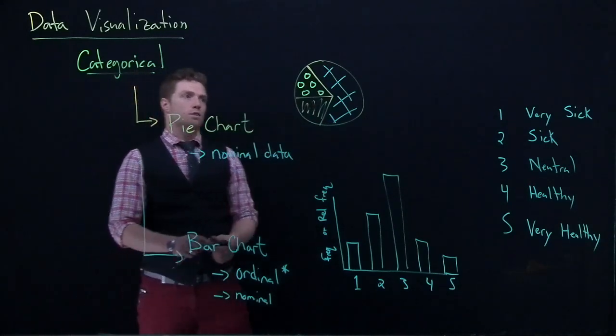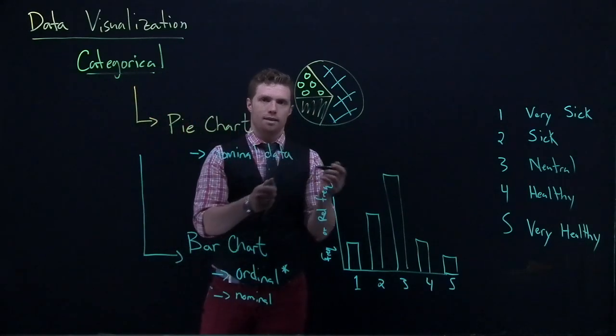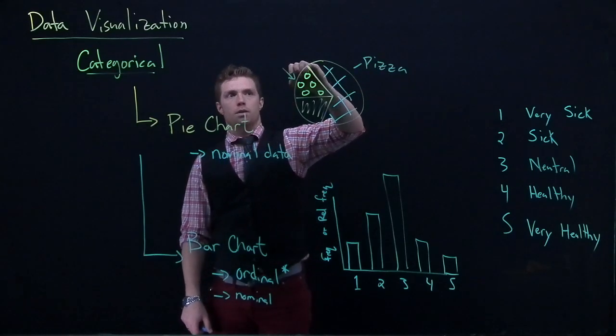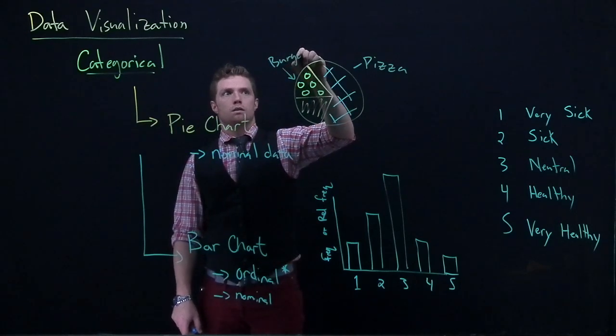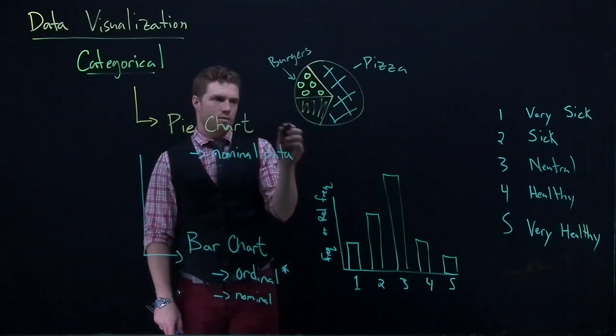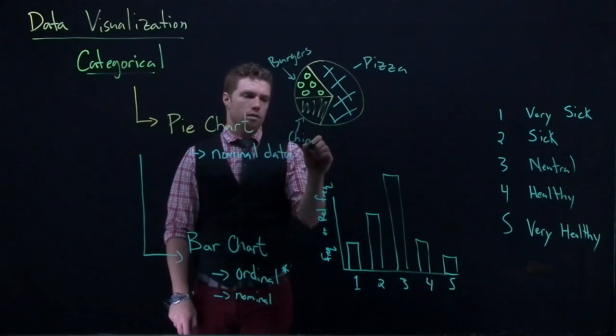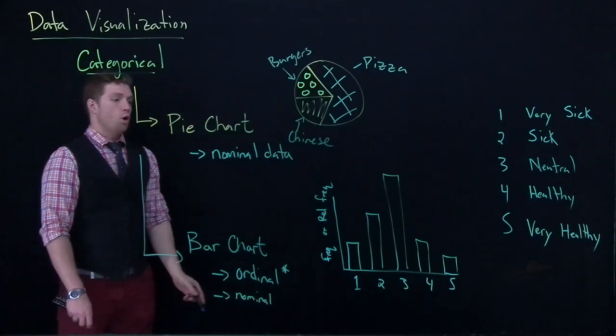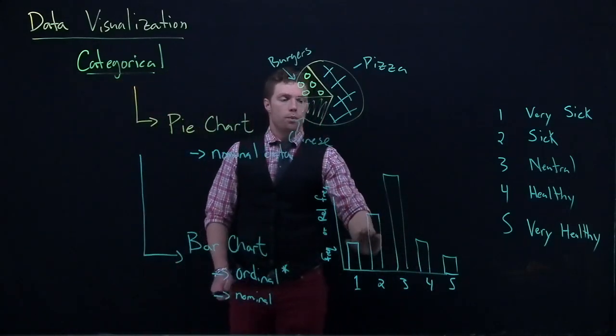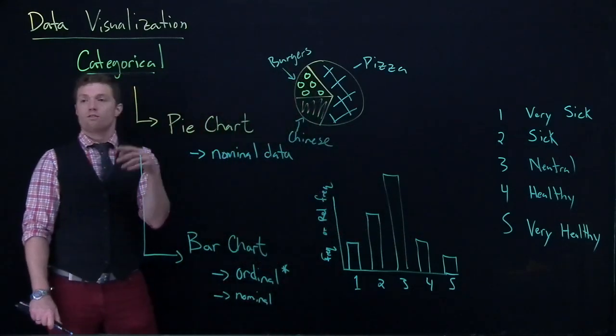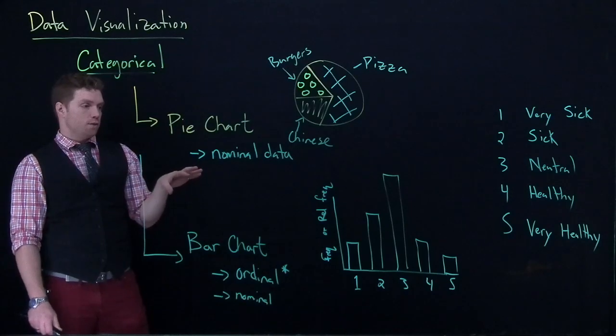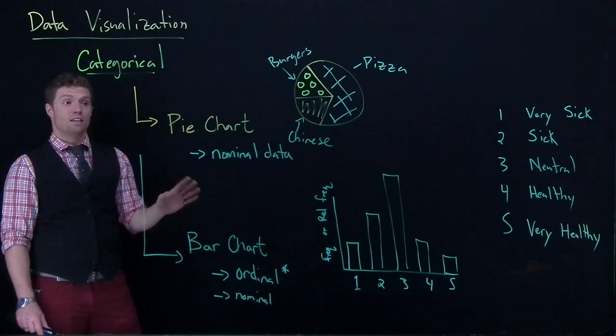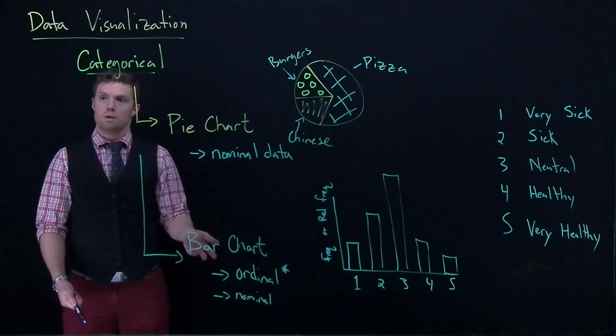Now we could do this bar chart. So maybe if this was like a dinner preference, which is like a pizza, hamburgers or burgers, and Chinese. Maybe if those were the only three options and those were what the responses were. We could do those down here as well. But with nominal data, we could reorganize how those bars look. And so we have to be careful that we don't try to give some sort of association to the patterns that we're seeing. Because the patterns that you see with nominal data don't mean anything.